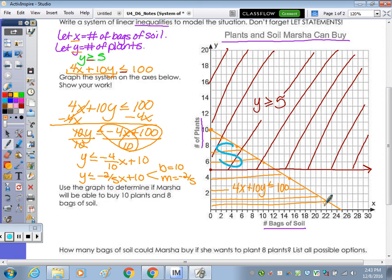Use the graph to determine if Marsha will be able to buy 10 plants and 8 bags of soil. Well, plants was the y, 8 bags of soil was x. So is 8, 10 in our solution set? No. No is correct. So if you go to 8 and then go up to 10, that's right here. 8, 10 is not in that solution set. So the answer is no. Next one.